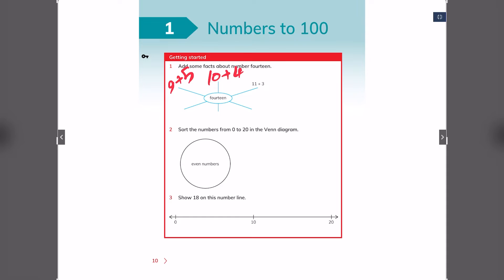The second part asks you to sort the numbers from 0 to 20 in the Venn diagram. The even numbers are here. The even numbers are any number that ends with 0, 2, 4, 6, 8. And the others that are outside the diagram are odd numbers.